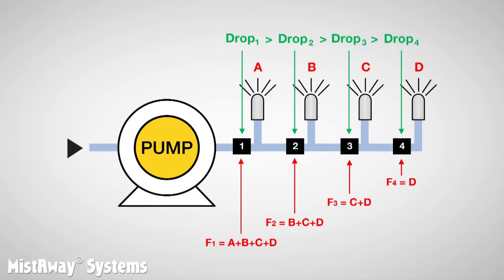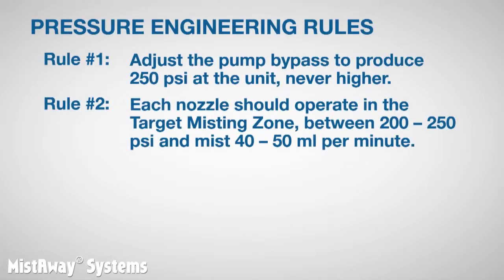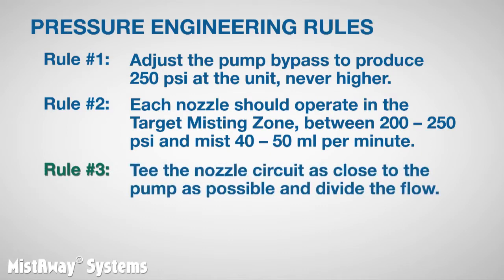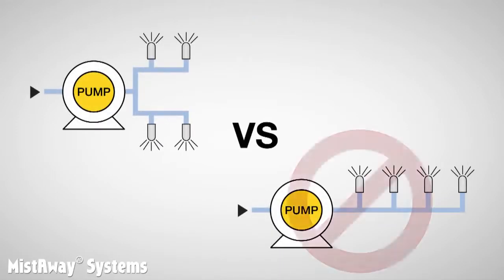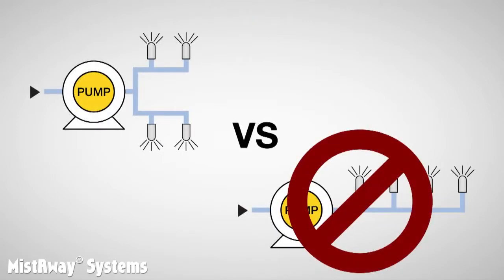So how can we make practical use of this understanding? Flow and pressure drop are highest just downstream of the pump. So the easiest way to reduce pressure drop is to divide the flow coming out of the pump as near to the pump as you can. Rule number 3: T the nozzle circuit as close to the pump as possible and divide the flow — which means position the unit somewhere in the middle of the nozzle circuit rather than at the end.